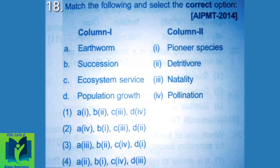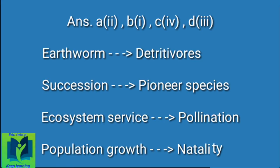Match the following and select the correct option: Earthworm – Detritivores; Succession – Pioneer species; Ecosystem service – Pollination; Population growth – Natality.